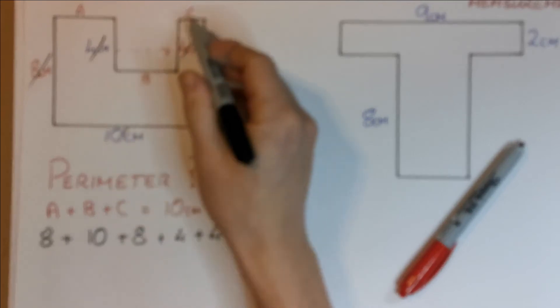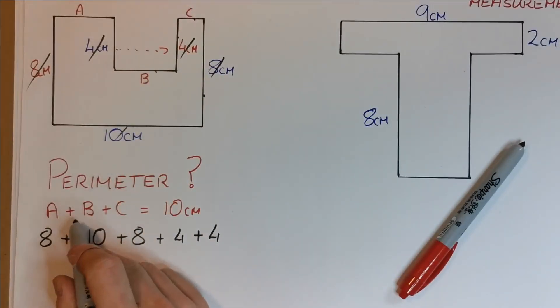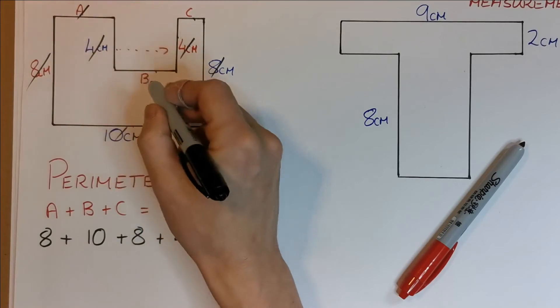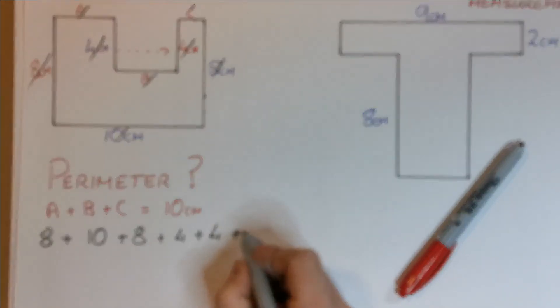What am I left with? I'm left with A, B and C, but I actually know that A plus B plus C is equal to 10, so I can cross the three of these off and put in 10.